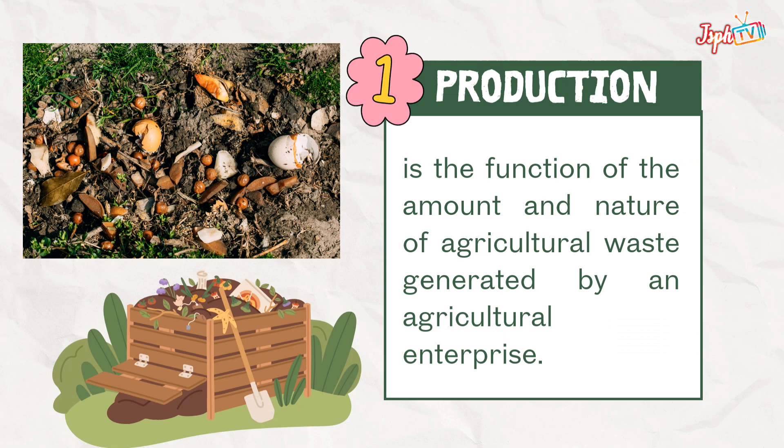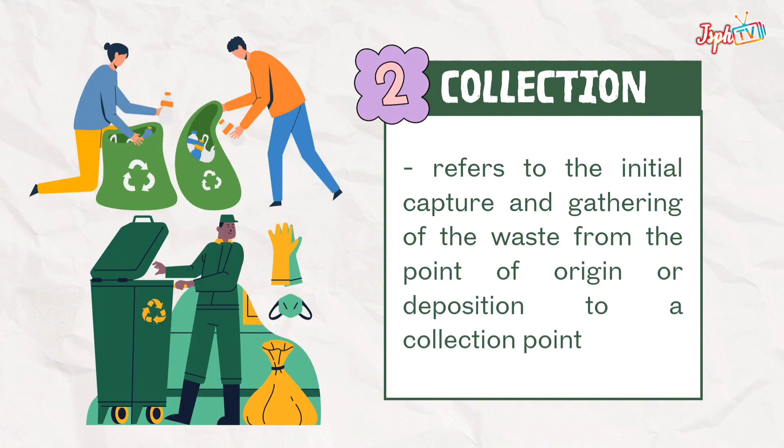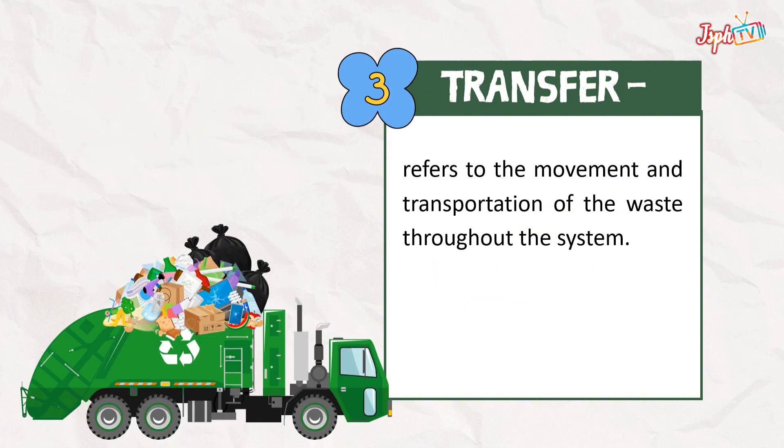Under production, it refers to the amount and the nature of agricultural waste generated by an agricultural enterprise. For collection, it refers to the initial capture and gathering of the waste from the point of origin or deposition to a collection point.